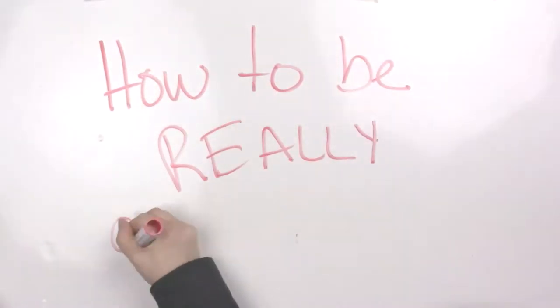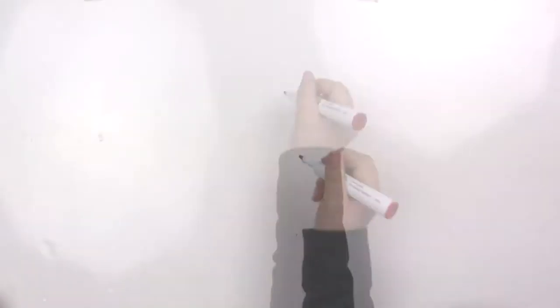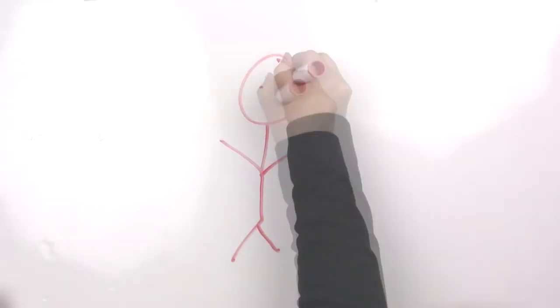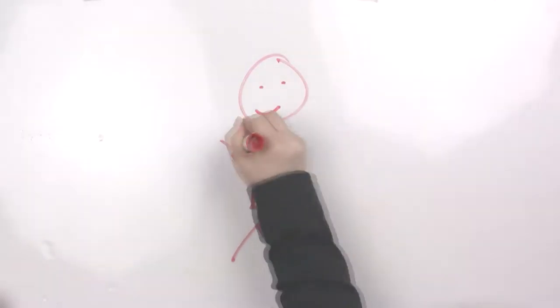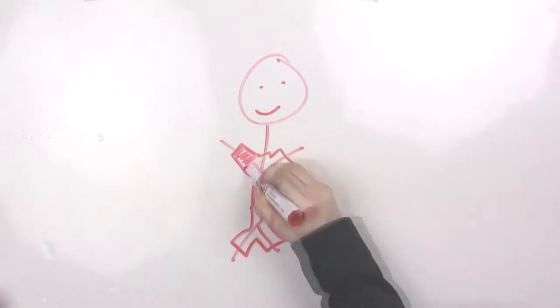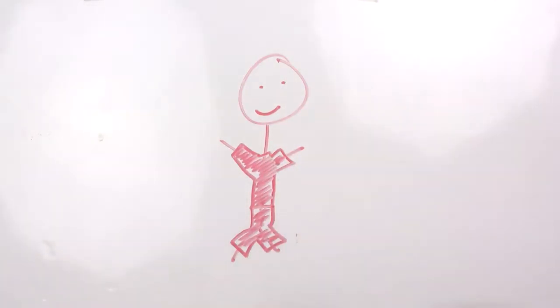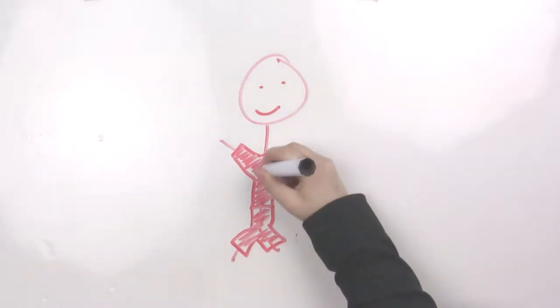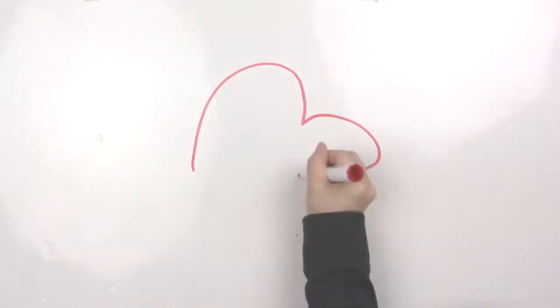How to be really cool at DeForest Area High School. Step 1. First, you have to wear the right things. You need to wear Nike sweatpants and a Nike hoodie every day of your life. Don't let anyone think you own anything else except for those things. Make sure you look like a complete bum.